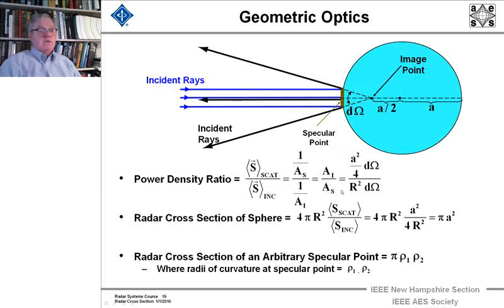The area that's scattered is r squared times the solid angle with this specular point, and 4 pi, where a squared divided by 4 times d omega is the incident area. And the radar cross-section is just 4 pi times r, the distance to the radar, divided by those quantities. And that comes out to pi a squared. So for the cross-section of a sphere, we get just the area subtended by the sphere, pi a squared.